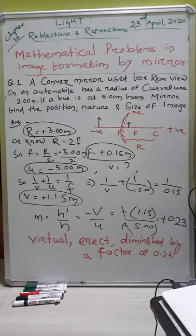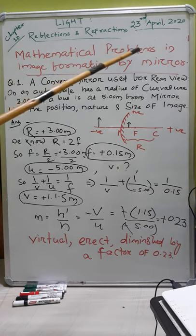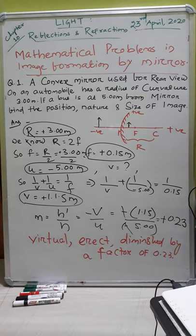Good morning again. Now we are going to discuss how to solve some mathematical problems or numerical problems involved in image formation. As we have known, the mirror formula is 1 by V plus 1 by U equal to 1 by F, and the magnification formula is M equal to H dash by H, or M equal to minus V by U.